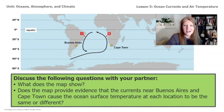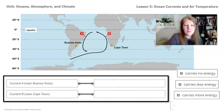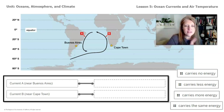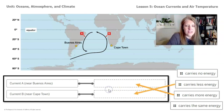Let's take a look at this graphic. It shows current A near Buenos Aires and current B near Cape Town, like a fill-in-the-blank matching story. How would we describe current A? The ocean current that passes Buenos Aires comes from the equator — the closer a location is to the equator, the more energy it receives from the sun. Therefore, this current carries more energy; the water moving away from the equator is actually warmer than the water around it.